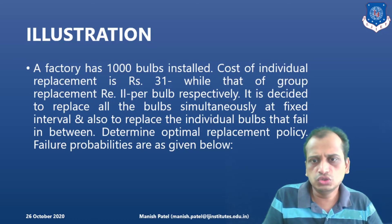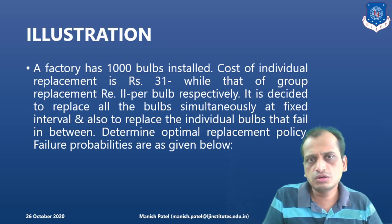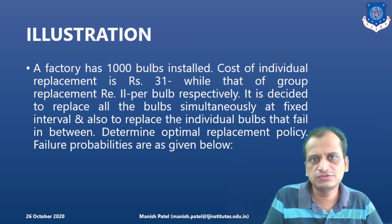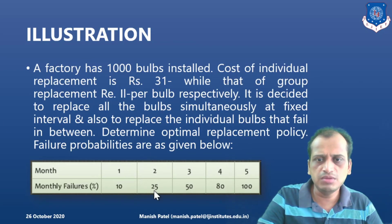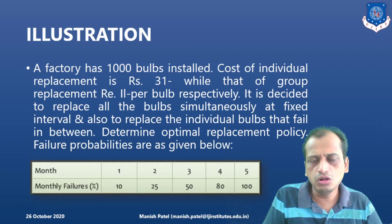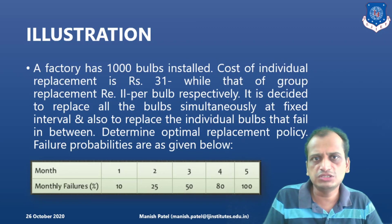The company also replaces individual bulbs that fail in between — if some bulbs are found faulty in between that phase, they have to be replaced individually as well. The company wants to find out the optimal replacement policy: replace them individually as and when required, or in a group at a certain fixed interval of time. A table is provided with different months 1, 2, 3, 4, 5 and cumulative failure percentages. In the first month the probability of failure is 10%, at the end of the second month it is 25%, and at the end of the fifth month the probability is 100%, meaning all bulbs need replacing by then.